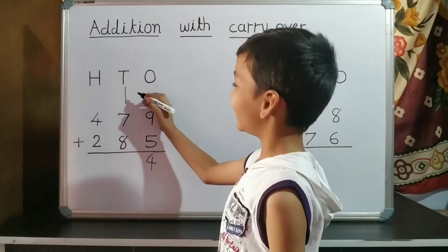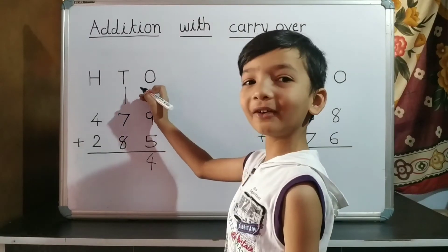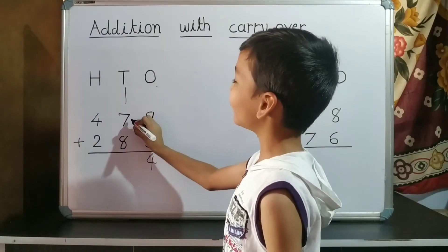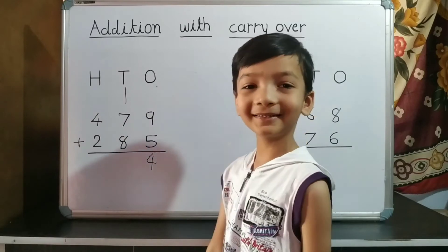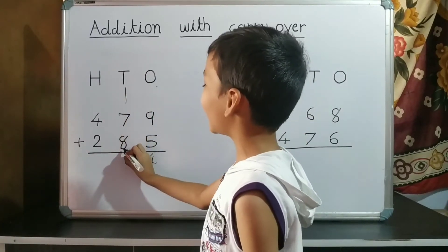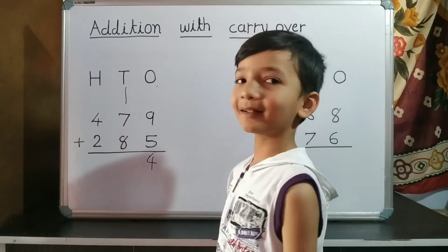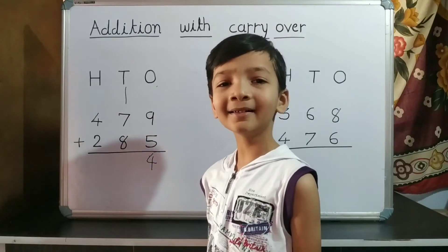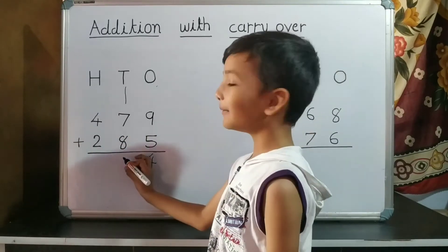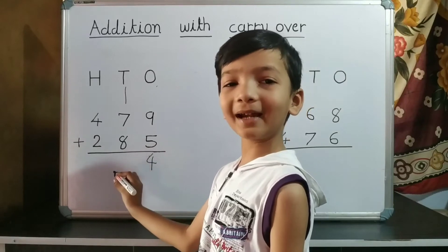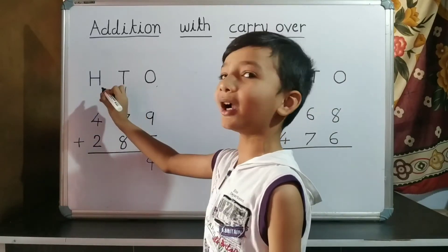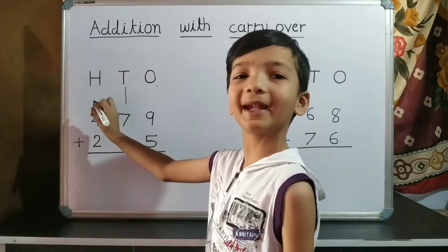Now we do addition of ten's place. 1 plus 7 is 8. 8 plus 8 is 16. So we write 6 on ten's place and 1 carryover to hundred's place.